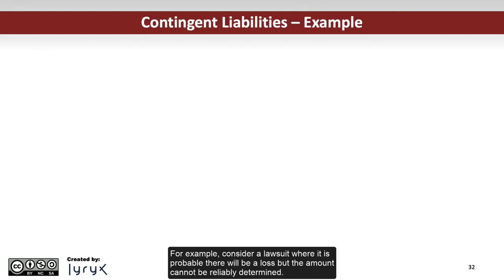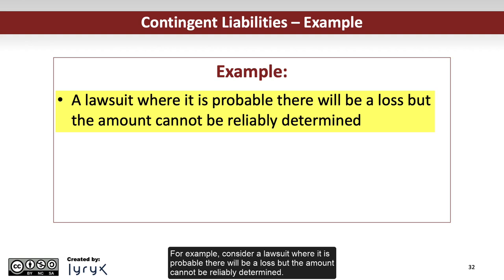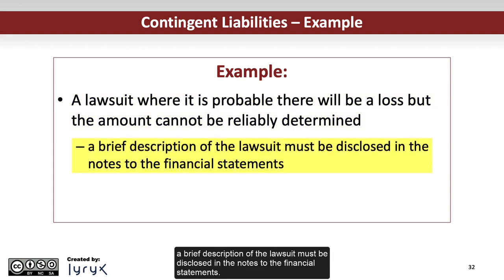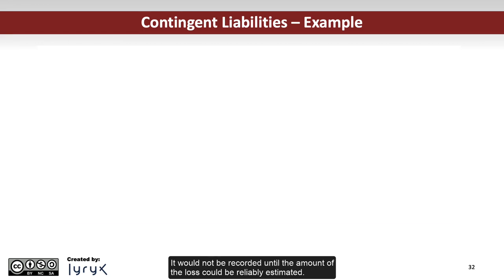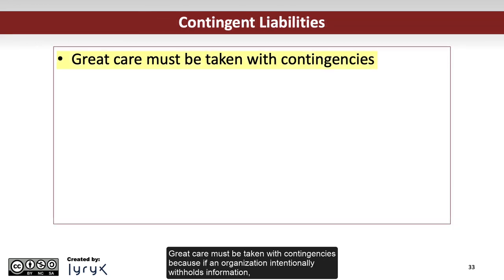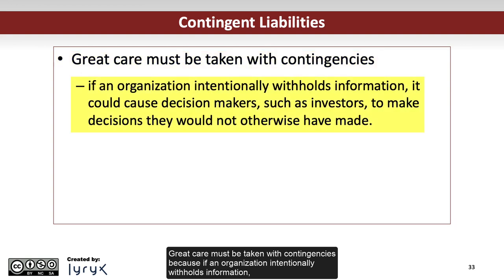For example, consider a lawsuit where it is probable there will be a loss, but the amount cannot be reliably determined. Since we cannot estimate the liability, a brief description of the lawsuit must be disclosed in the notes to the financial statements. It would not be recorded until the amount of the loss could be reliably estimated. Great care must be taken with contingencies because if an organization intentionally withholds information, it could cause decision-makers, such as investors, to make decisions they would not otherwise have made.